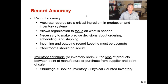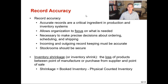Inventory shrinkage is the loss of products between the point of manufacture or purchase from a supplier and the point of sale. Shrinkage equals booked inventory minus physically counted inventory — that's how you determine your inventory shrink. In the manufacturing facility I worked in, we had gates built around our most expensive items to keep them secure, and a separate secure stock room where our vendor managed consignment inventory at our facility.